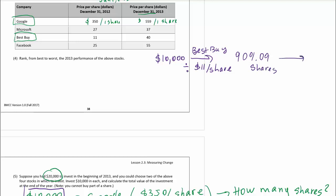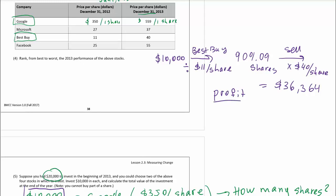Then you sell those 909.09 shares at the higher price of $40 per share. Multiply by 40, and look at the amount of money you collect: $36,364. Making a profit of $36,364 minus $10,000 gives us $26,364 in profit. That means Best Buy is a much better investment based on the numbers from that year.